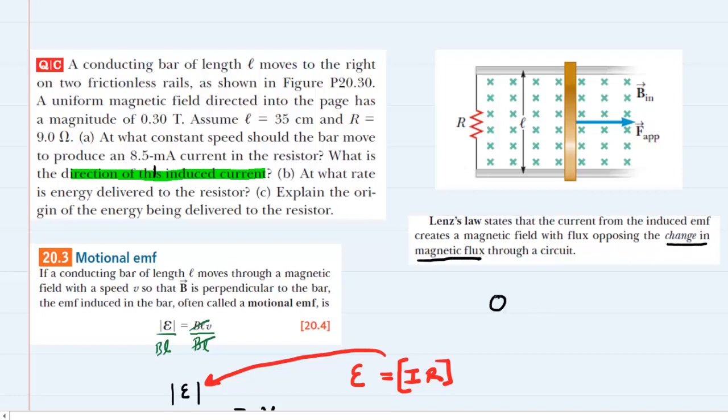Lenz's Law states that the current from the induced EMF creates a magnetic field with flux opposing the change in magnetic flux. It's a bit of a mouthful. We know that magnetic flux, symbolized by Greek letter phi, is equal to magnetic field times area times the cosine of an angle. Now what is important for us to notice is as this bar is dragged to the right, this area right here is actually going to increase.